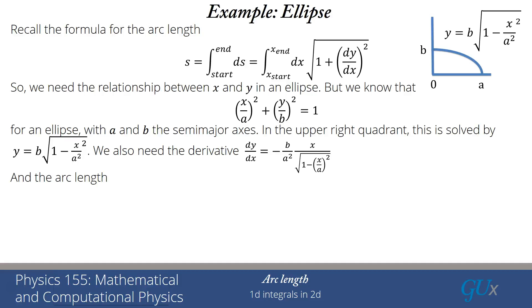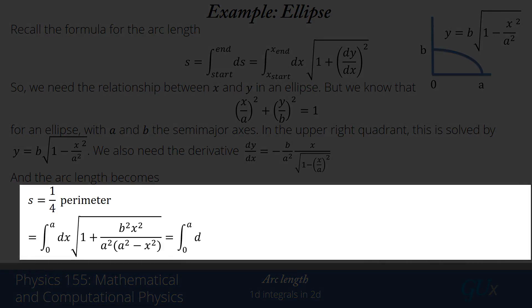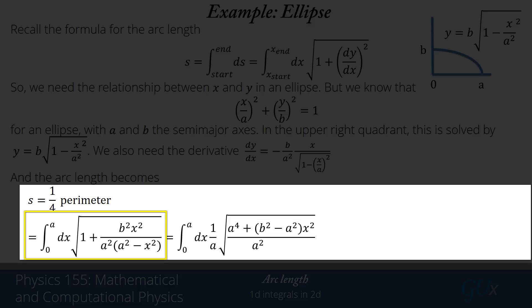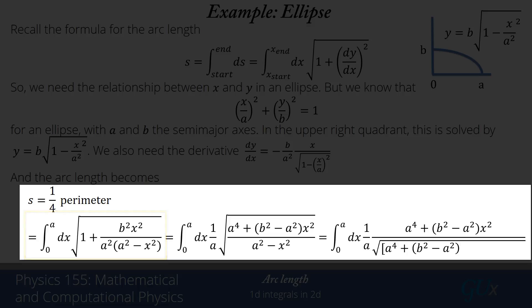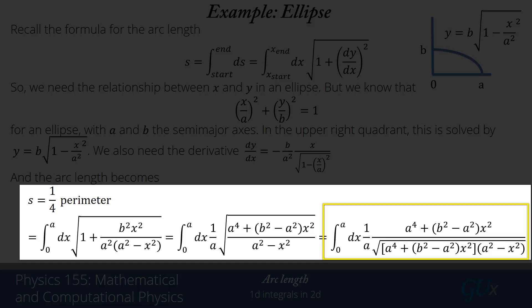I'm going to have to square that derivative and add one in order to get the arc length integral. I'll write it as one-fourth of the perimeter: the integral from zero to a of dx times the square root of 1 plus b squared x squared divided by (a squared times (a squared minus x squared)). Putting everything over the common denominator, things don't simplify so nicely — I get a to the fourth plus (b squared minus a squared) times x squared, divided by a squared minus x squared. Multiplying numerator and denominator appropriately, I end up with a product of two quadratics under the square root in the denominator.